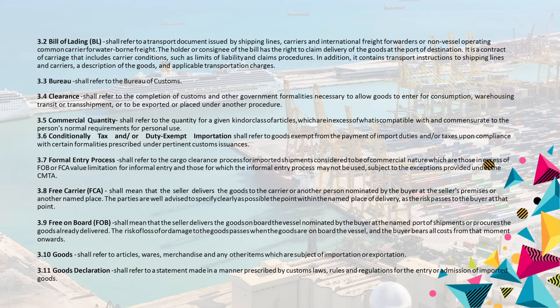3.8 Free Carrier (FCA) shall mean that the seller delivers the goods to the carrier or another person nominated by the buyer at the seller's premises or another named place. The parties are well advised to specify clearly as possible the point within the named place of delivery, as the risk passes to the buyer at that point. 3.9 Free On Board (FOB) shall mean that the seller delivers the goods on board the vessel nominated by the buyer at the named port of shipment or procures the goods already delivered. The risk of loss of or damage to the goods passes when the goods are on board the vessel, and the buyer bears all costs from that moment onwards.